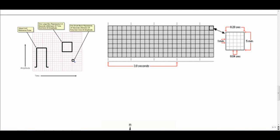Each little box is one millimeter in width and one millimeter in height. Each one millimeter in width is equal to 0.04 seconds or 40 milliseconds. Each one millimeter in height is equal to 1 millivolt.